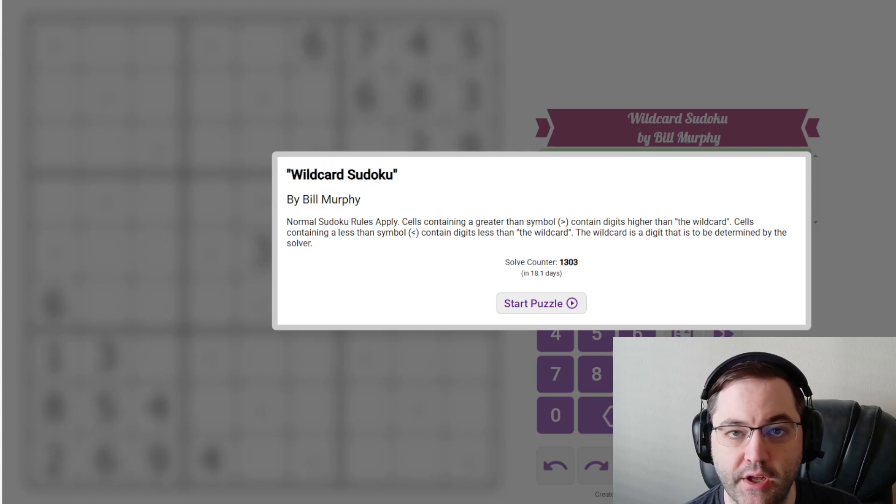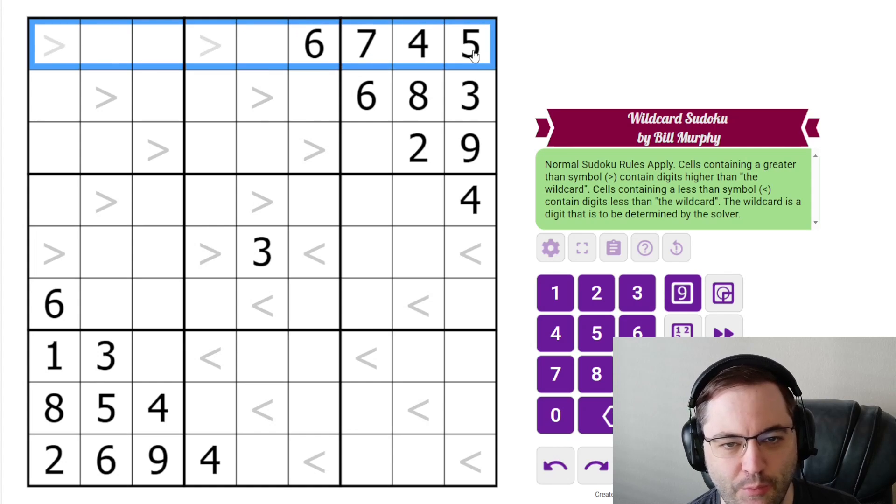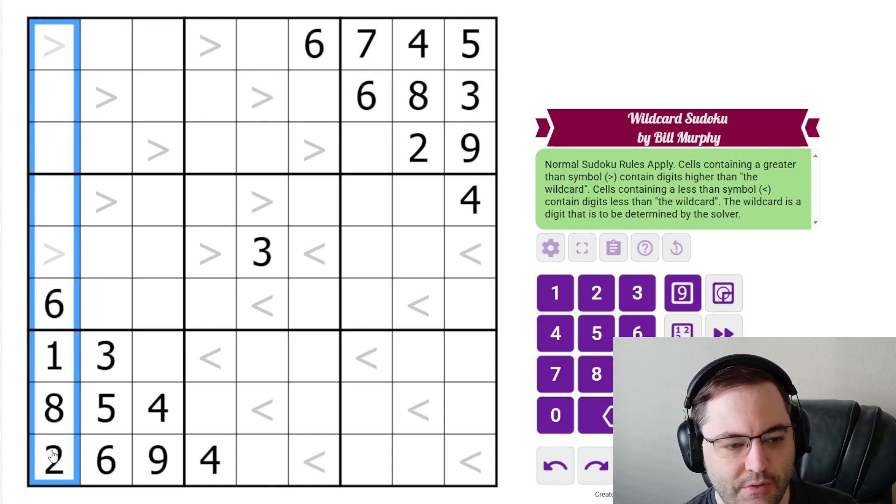Hi everyone, this is the Gas Walkthrough for July 14th. I'm Philip Newman. Today I'm solving Wildcard Sudoku by Bill Murphy. This is new to me and I didn't test this before Bill posted it, so this will be an interesting experience. We have normal Sudoku rules, one to nine in each row, column,